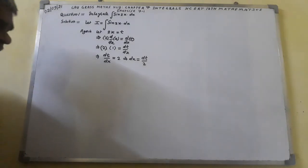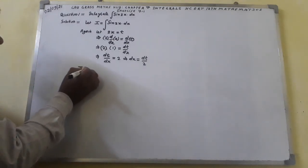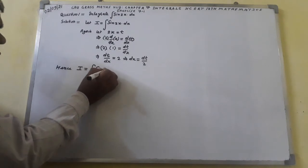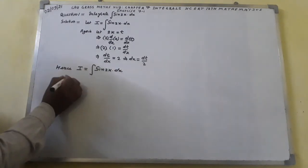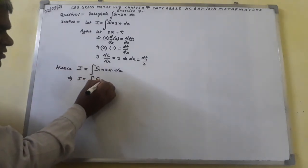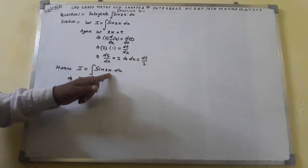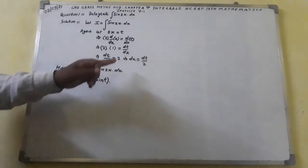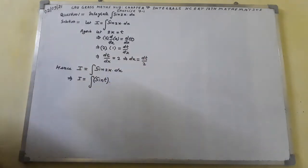Now I shall substitute the value: 2x equal to t, and dx equal to dt/2, into the function I. So I is equal to integral sin(2x) dx. In place of 2x I shall write t, and in place of dx I shall write dt/2.